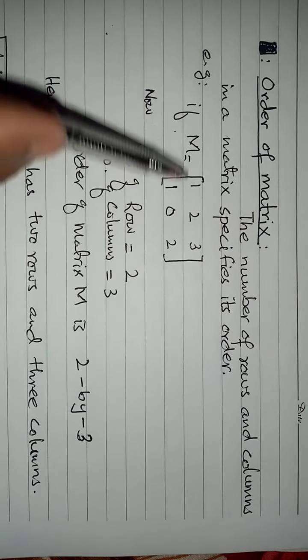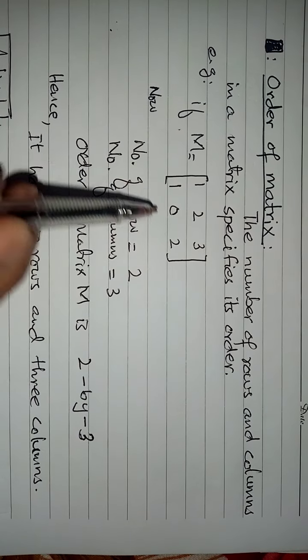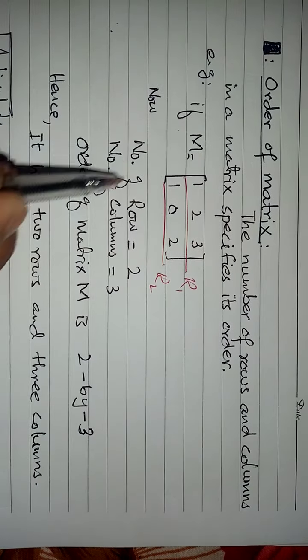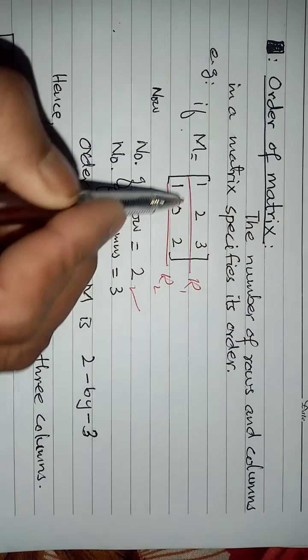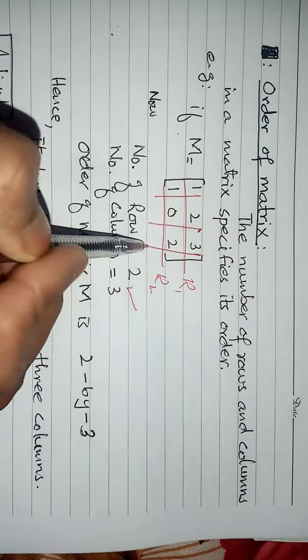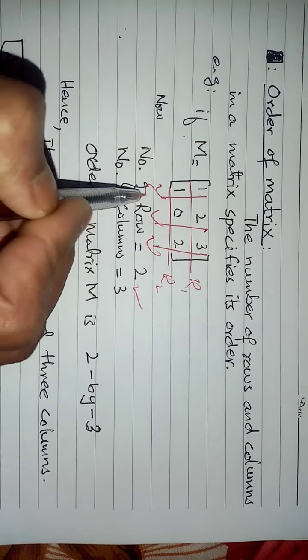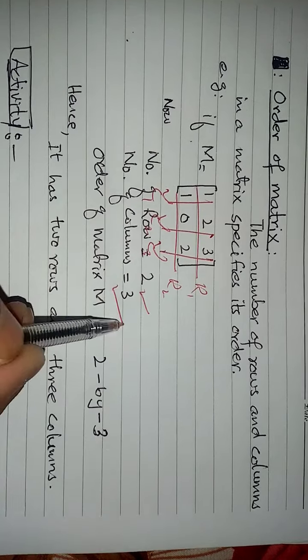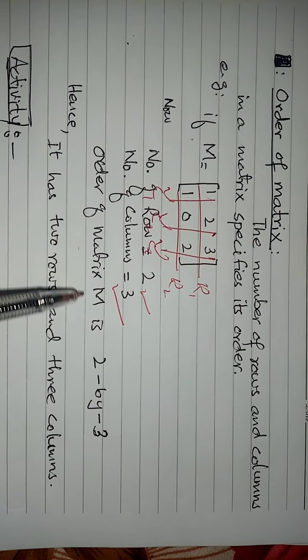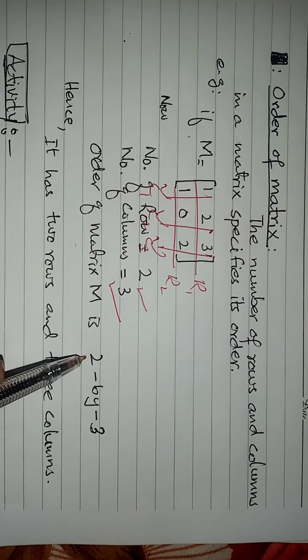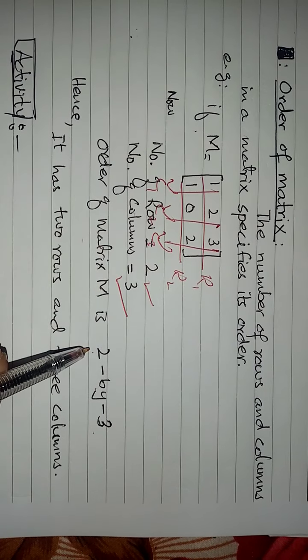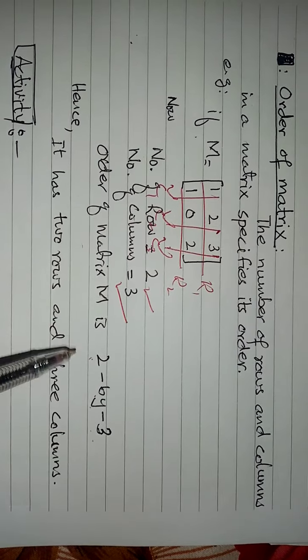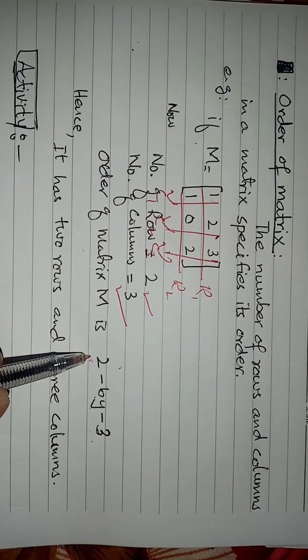These are its elements. So in this, number of rows - if we observe, number of rows are R1, R2 - number of rows are 2. And if we observe, number of columns are C1, C2, and C3 - number of columns are 3. Then order of Matrix is denoted by 2 by 3. Number of rows 2 and number of columns are 3. Always put number of rows first and then number of columns at the end. So it means that it has 2 rows and 3 columns.